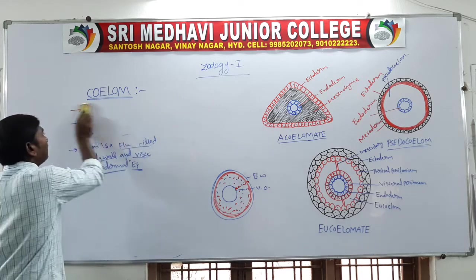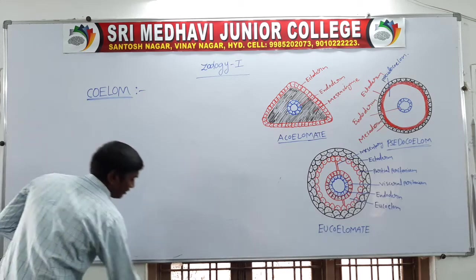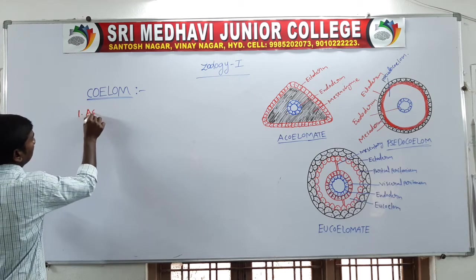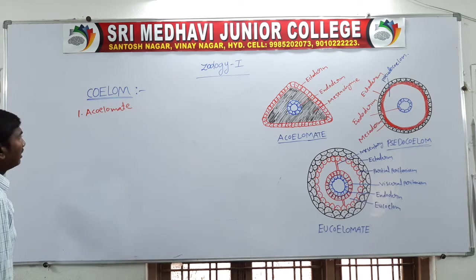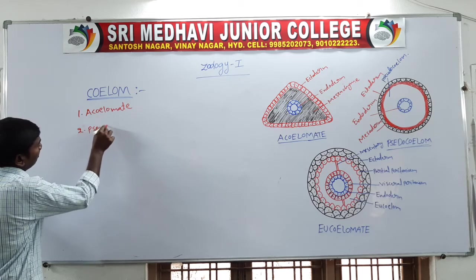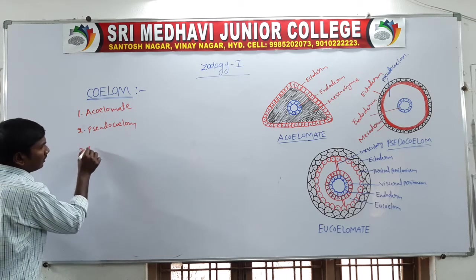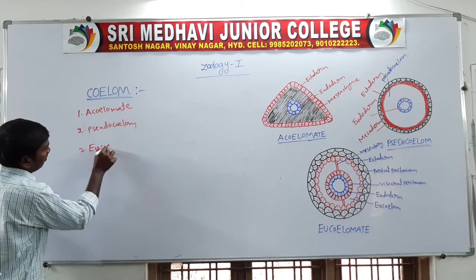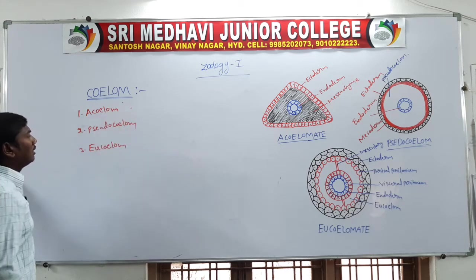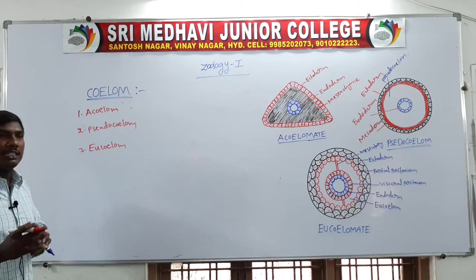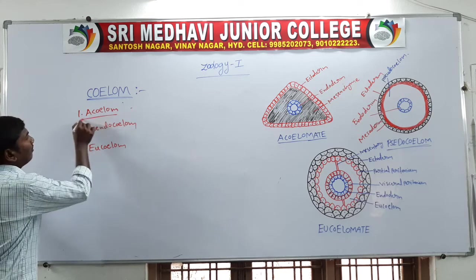The coelom is of three types: first, acoelomate; second, pseudocoelomate; third, true coelom or eucoelomate.